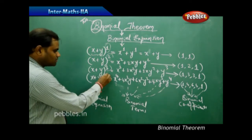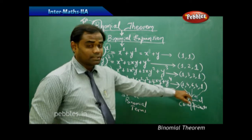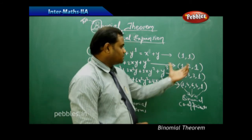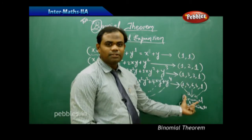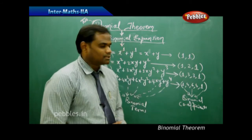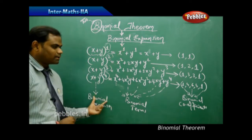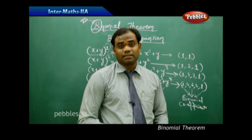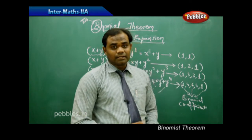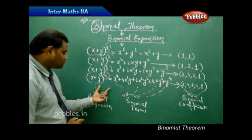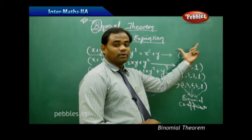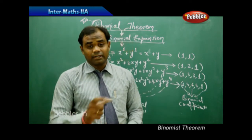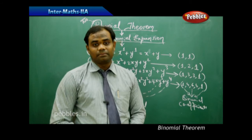As the expansion changes with the power, the binomial coefficients also change. We will study the relation between the coefficients for each n as it increases. For example, if n = 5, 6, or 7, the coefficients are always related to the previous ones. Let's see how the binomial coefficients are connected for all n belonging to positive integers.